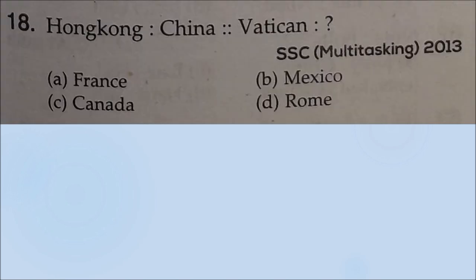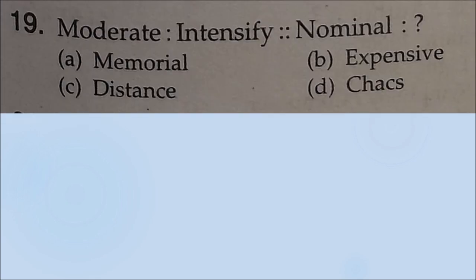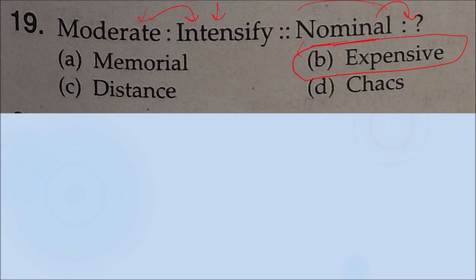Question 18: Hong Kong is a place in China. Similarly, Vatican City is a place in Rome — option D is correct. This was also asked in SSC Multi-Tax 2013. Question 19: moderate is the opposite of intensify. In the same way, nominal means cheap, and its opposite is expensive. So option B, expensive, is your correct answer.